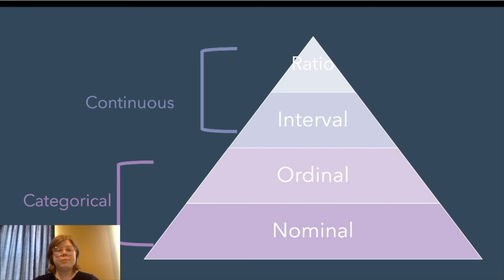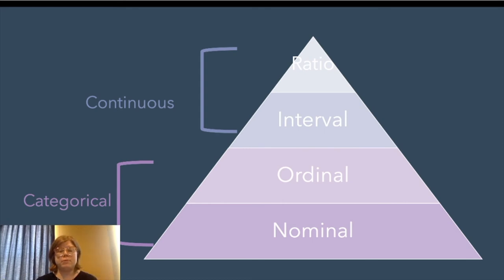Nominal measures are a type of categorical measure where the values the measure can take are just names of categories that cannot be meaningfully ordered. For example, nationality — you can't say that German is more nationality than Australian. They're both nationalities and can't be meaningfully ordered. We can order them arbitrarily, like alphabetically, but that doesn't mean one is higher on the scale of nationality.